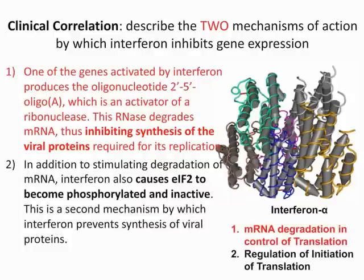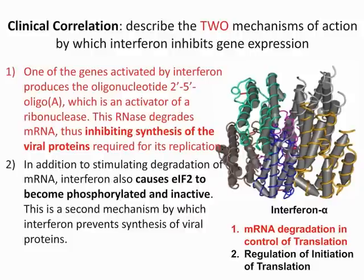The last clinical correlation describes two mechanisms by which interferon inhibits gene expression. First, interferons can produce oligo A, an activator of ribonuclease, which degrades mRNA and thus inhibits synthesis of viral proteins. Second, interferon can cause EIF2 to become phosphorylated and inactive — if EIF2 can't bind with met-tRNA, the initiation complex cannot form. Definitely know these two mechanisms for interferons.